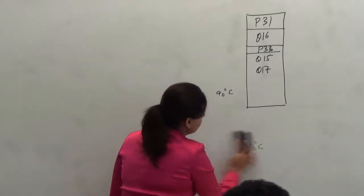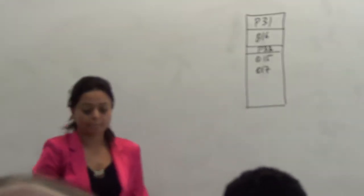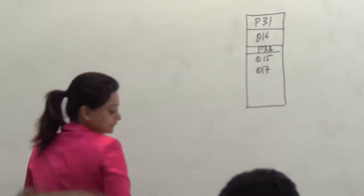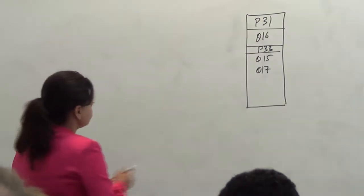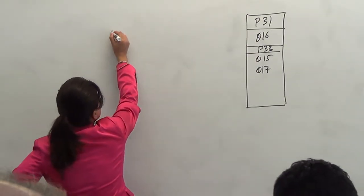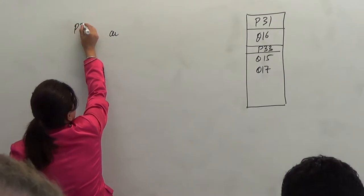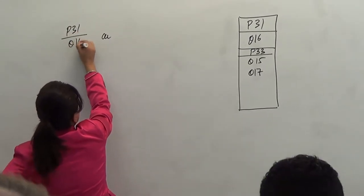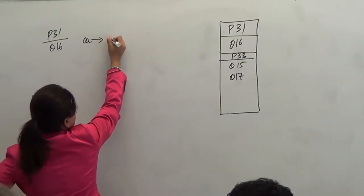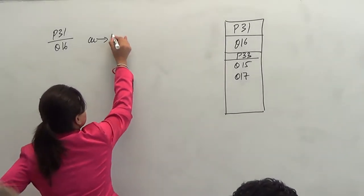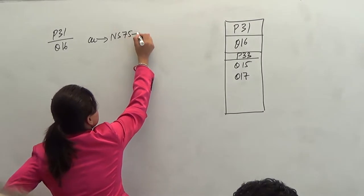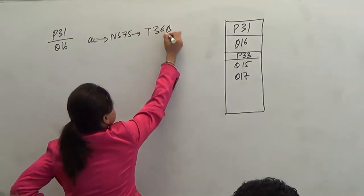Is it copper or aluminum here? Copper. So, let's go there. By the way guys, we're doing page 31, question 16. Copper and NS75 or NS90? 75. So guys, the table I'm going to choose is what? 36B.